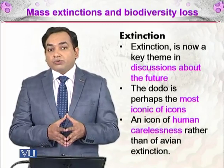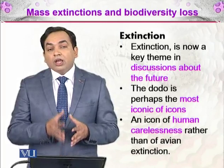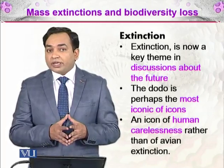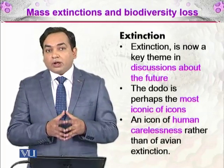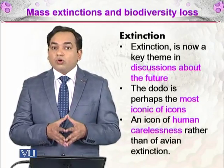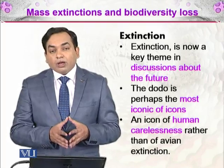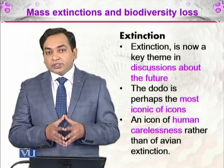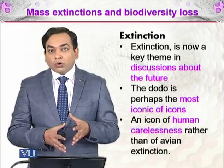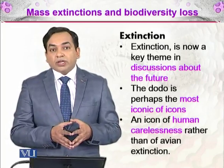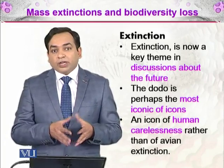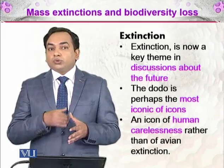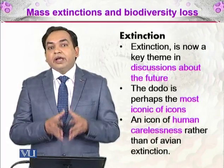We are thinking about the future as well when talking about extinction. The dodo is perhaps the most iconic symbol of extinction. The dodo was a bird which went extinct due to overhunting, and it is an icon of human carelessness — we don't care about other organisms and use them for our own benefit. The dodo was very docile, came to humans, was an island bird unable to fly, and due to the ease of hunting, it went extinct.